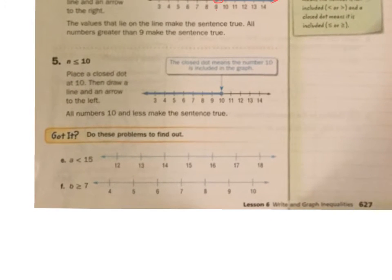n is less than or equal to 10. So you go to 10. Now you can put a closed dot here because 10 would work and it just has to be less than, which it could go on forever. Okay, let's try these.